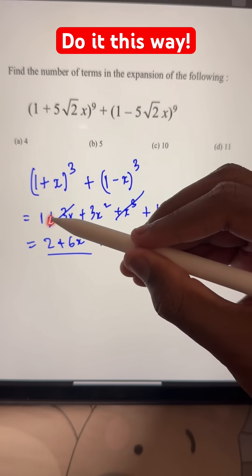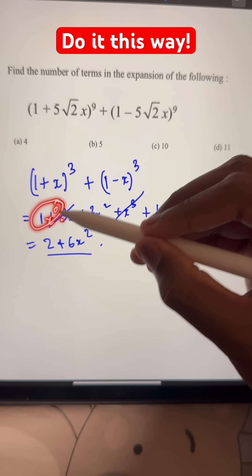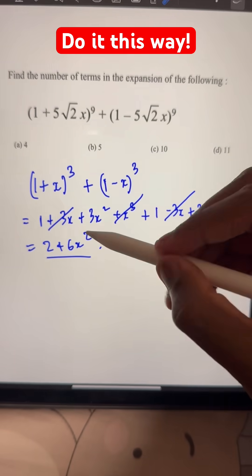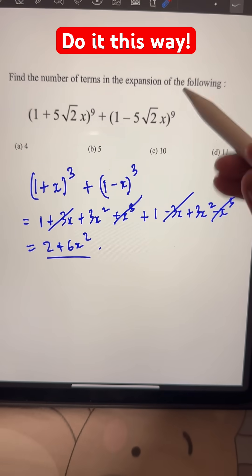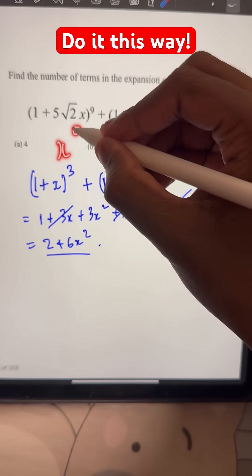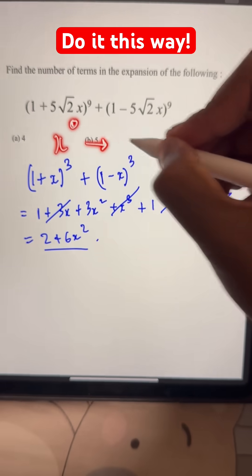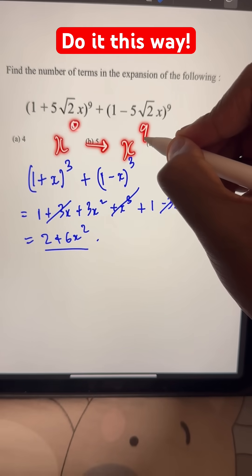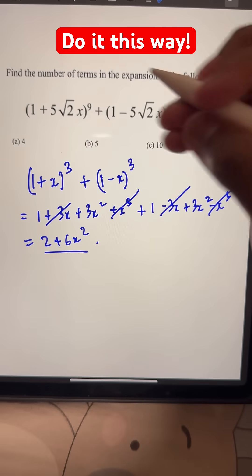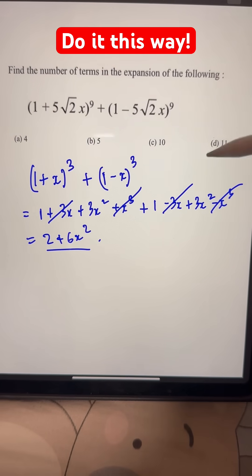The ones with even exponents - x⁰ (which is also even) - remain. In the original problem also, when we expand, we'll have exponents from x⁰ all the way to x⁹. All the odd ones will get canceled out. All the even ones will remain in a similar way.